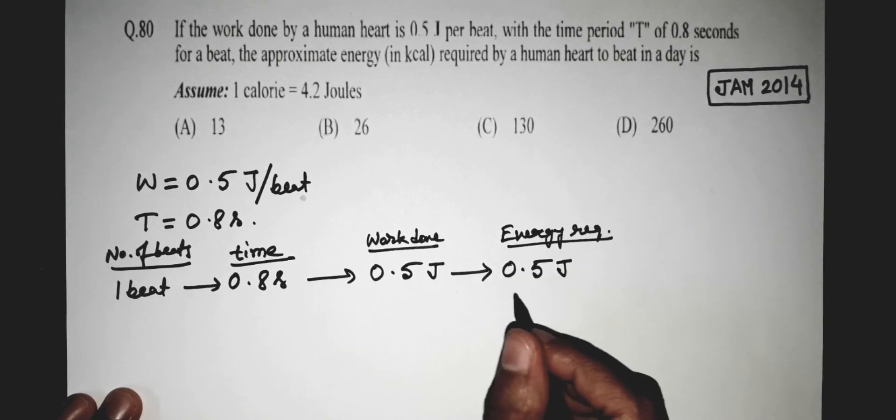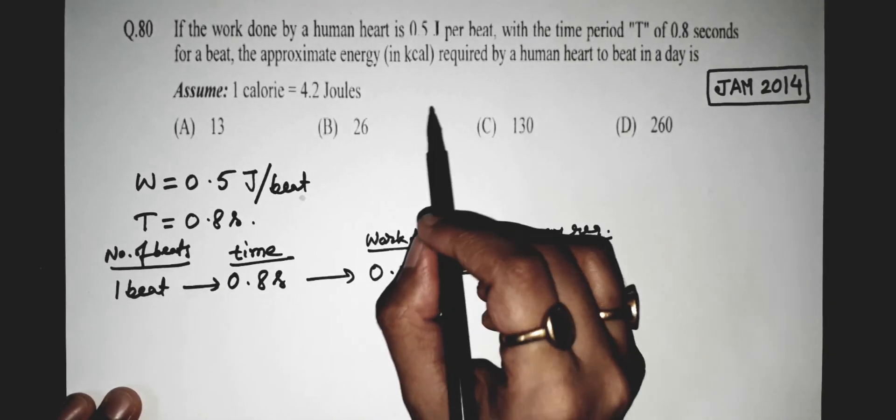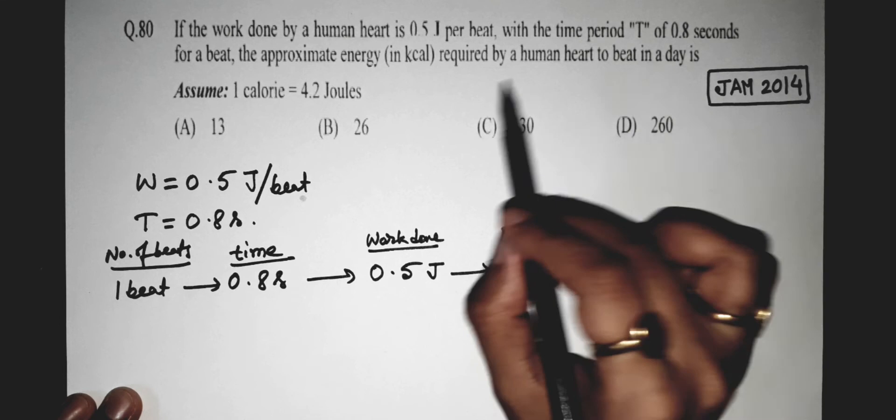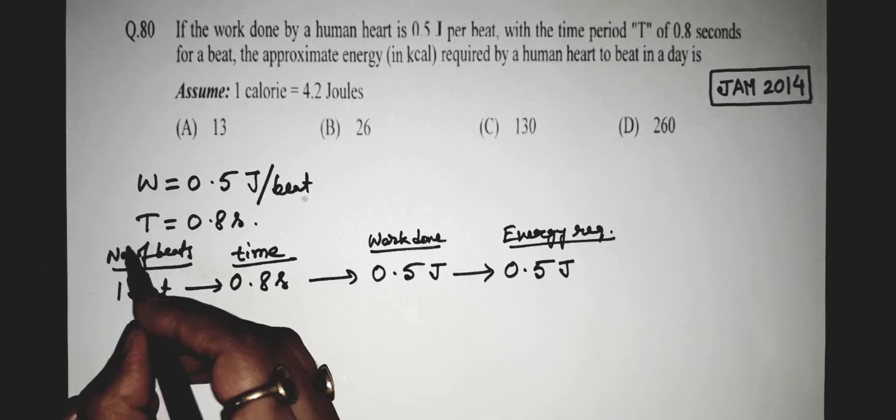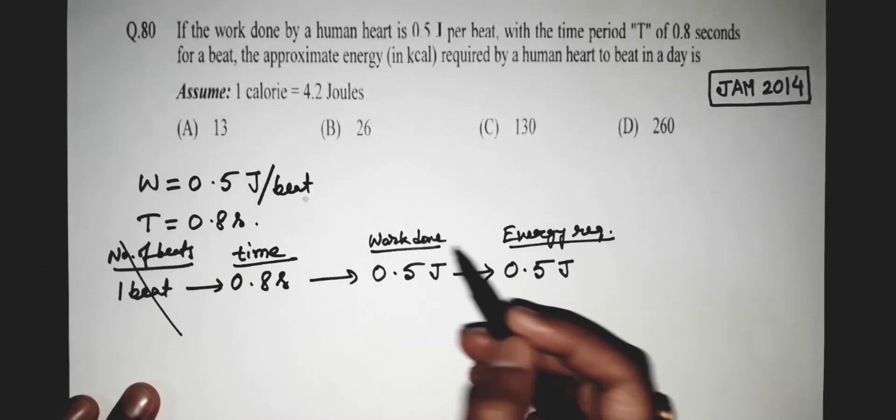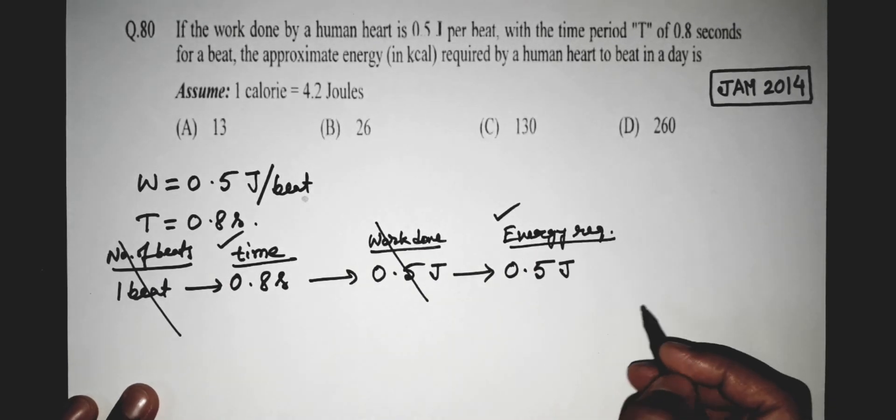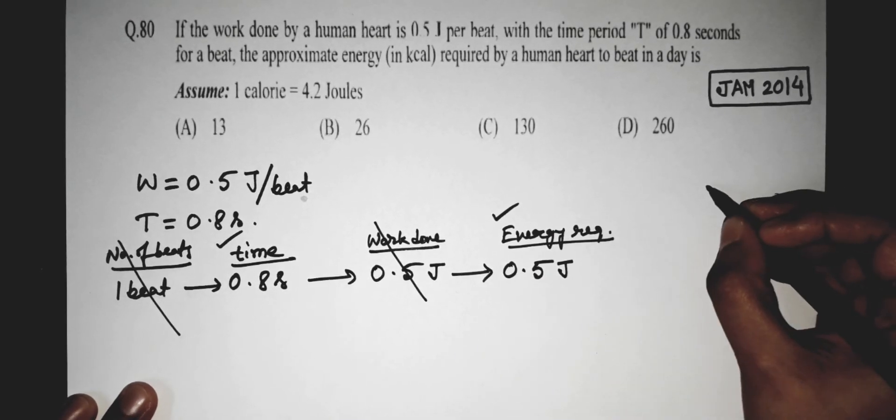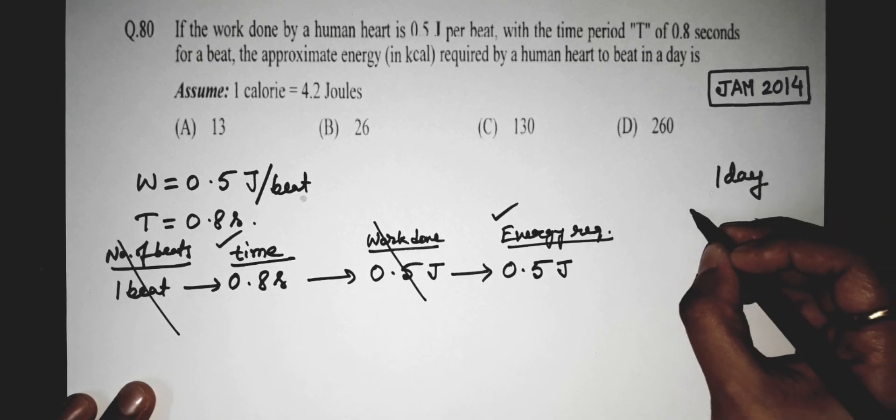Now, the question asks to calculate the total amount of energy required by a human heart in a whole day, to beat in a whole day. So we don't need this one and this one. We need this one and this one. Now, to calculate energy in a whole day, we should know what is one day, that is, what is the number of seconds in a day.